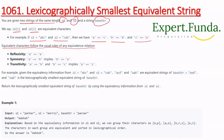Equivalent characters follow the usual rules of an equivalence relation: reflexivity (a == a), symmetry (a == b implies b == a), and transitivity (a == b and b == c implies a == c). We have to return the lexicographically smallest equivalent string of baseStr using the equivalency information from s1 and s2.